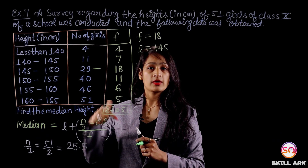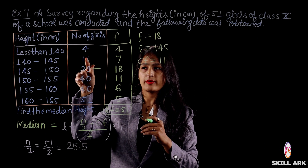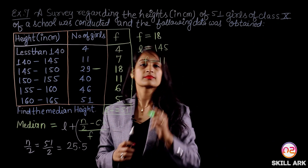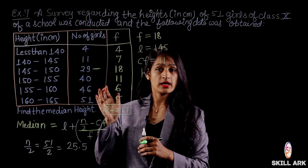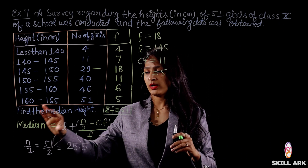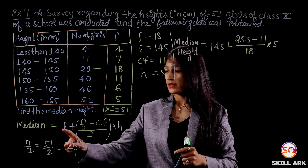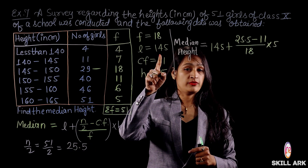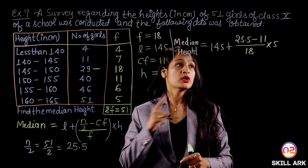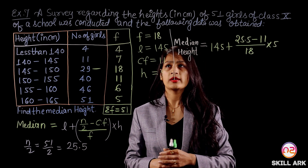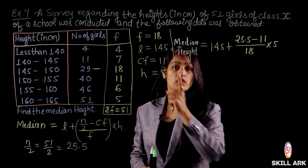CF is the cumulative frequency before the median class, which is 11. The frequency F of the median class is 18. H is the class width: 150 − 145 = 5. So all values are found: L = 145, N/2 = 25.5, CF = 11, F = 18, H = 5. We put these into the formula.